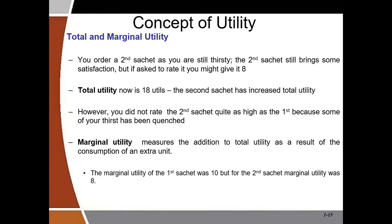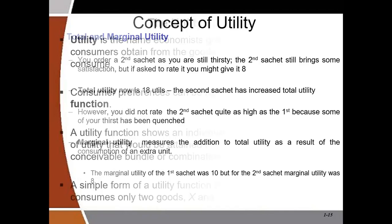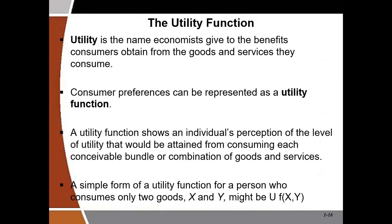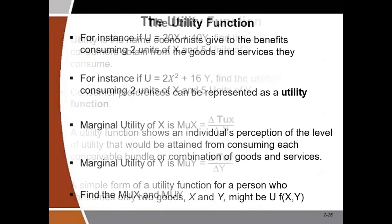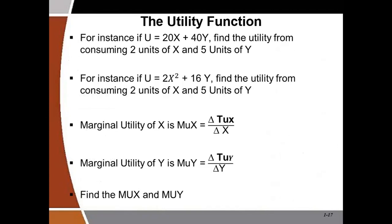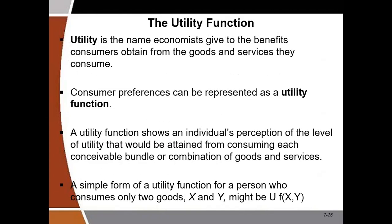This concept is called the law of diminishing marginal utility. Since utility can be measured in figures, we can have a utility function — anything that can be measured in figures can be modeled with functions.